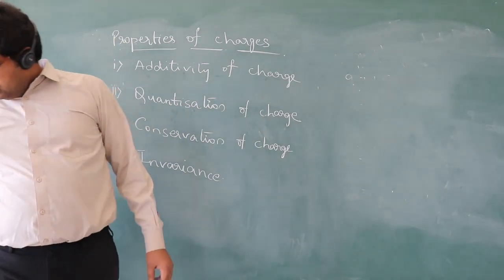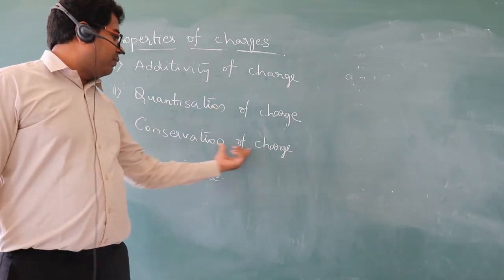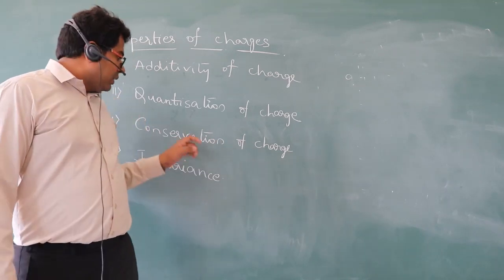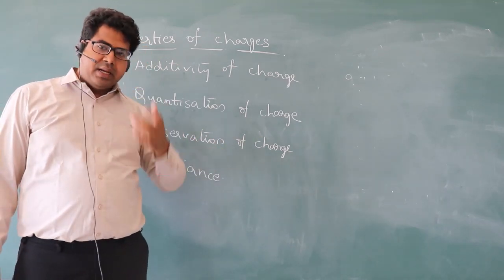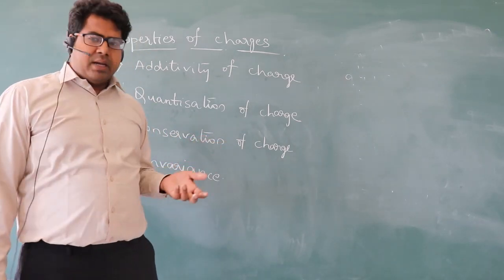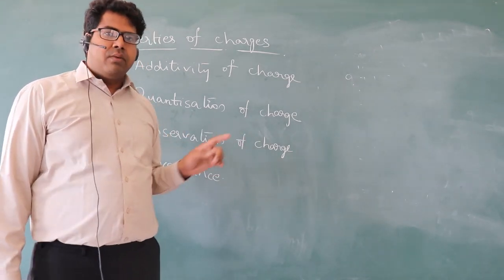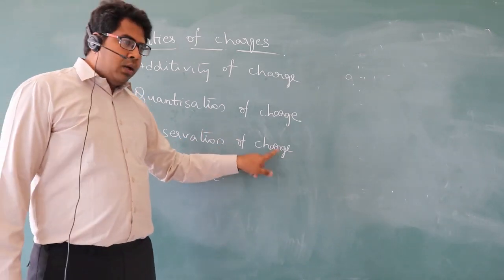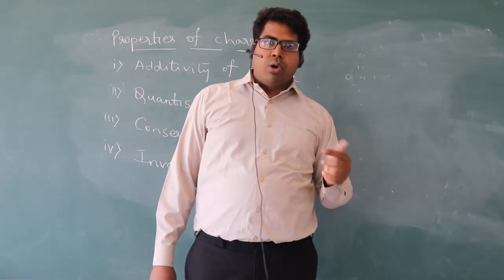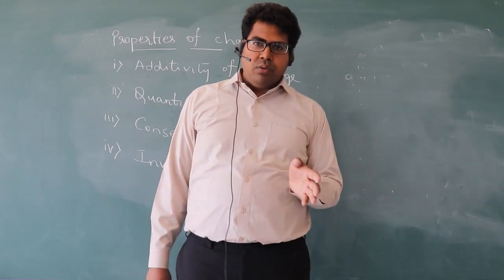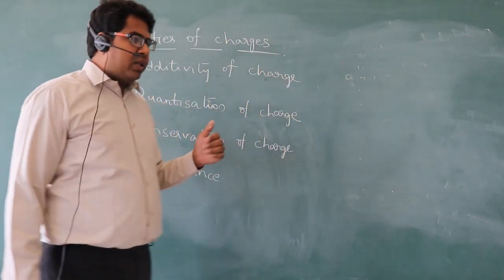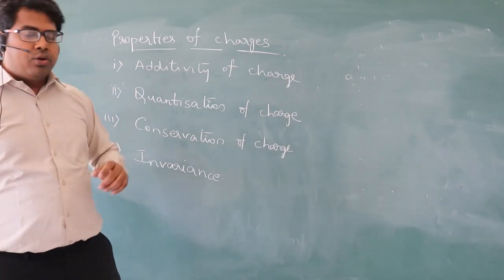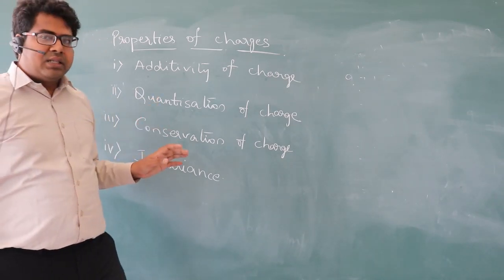Conservation of charge means charge can neither be created nor be destroyed. We may ask how a body gets charged — we already discussed that it happens only by transferring of electrons. The body which loses the negative charge gets positively charged, and the body which gains excess negative charge gets negatively charged. One more thing: transfer of charges includes transfer of mass.